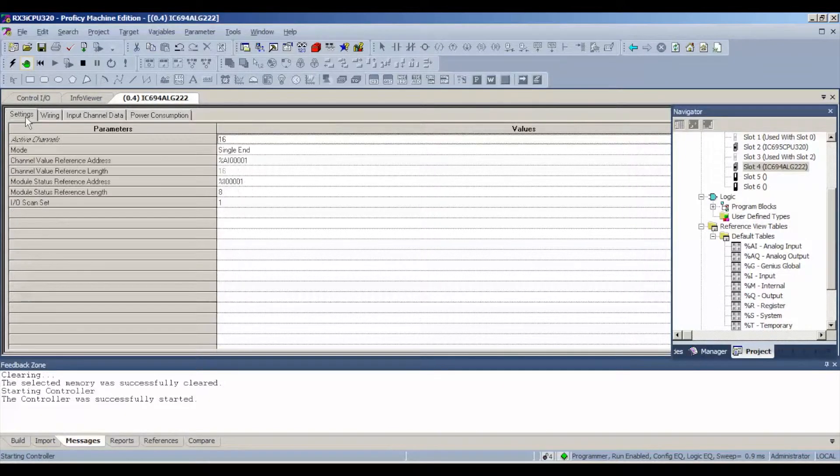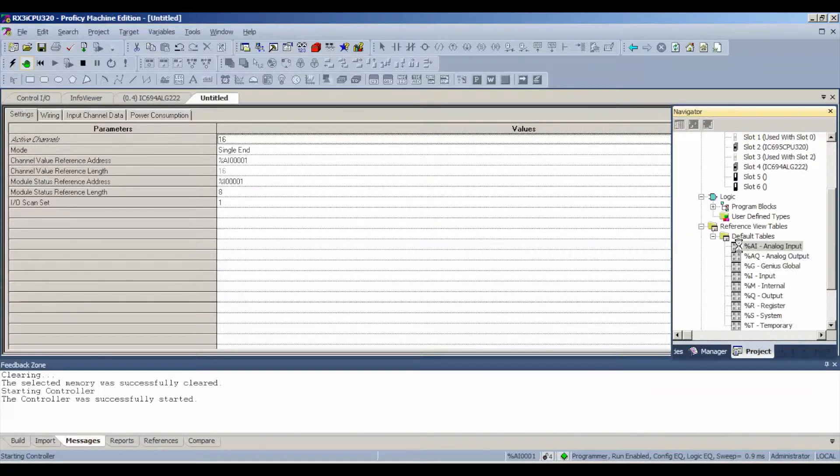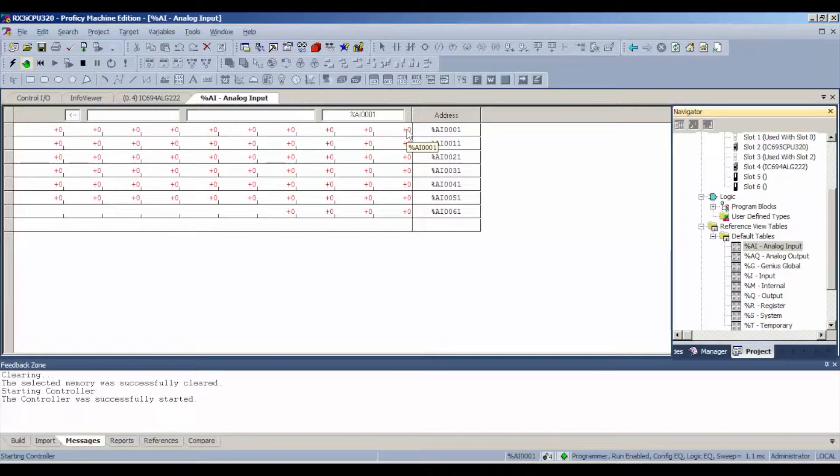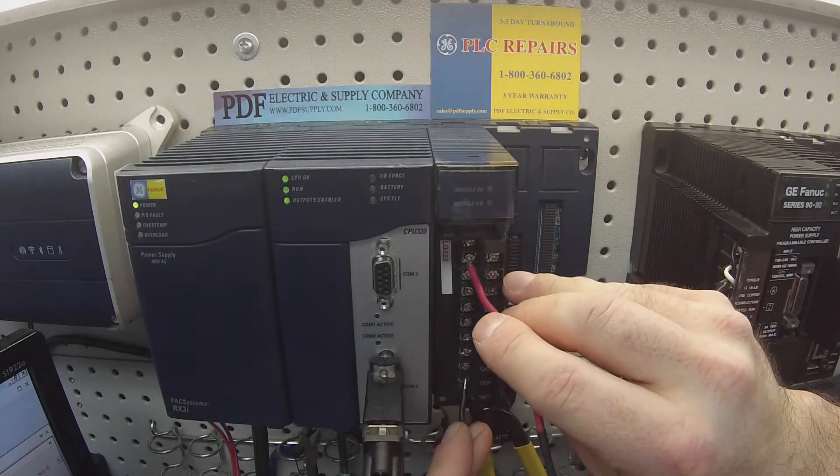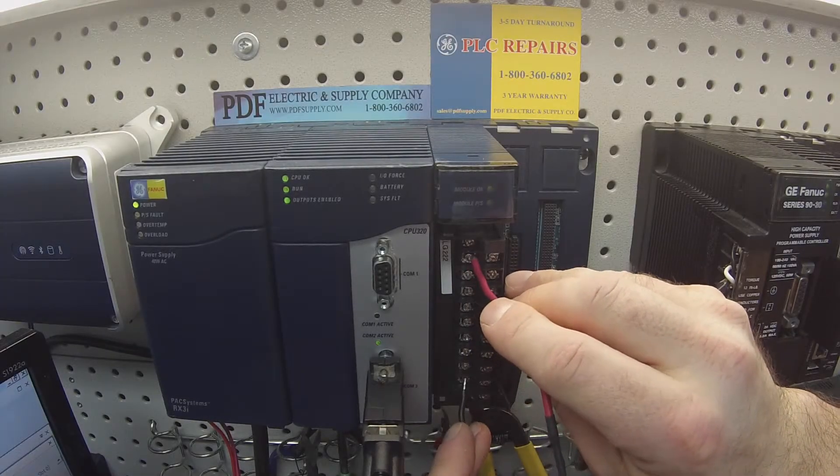If you look at your settings, our reference address, our first channel's going to be on 00001 analog input table. Here's our address. You can see my arrow hovering over it, and it's giving me an illumination that says analog input 00001. According to the wiring diagram, I'm going to plant my negative lead on terminal number 19. That's the bottom left-hand side. To agitate channel number one, I'm going to put my positive lead on terminal number three.